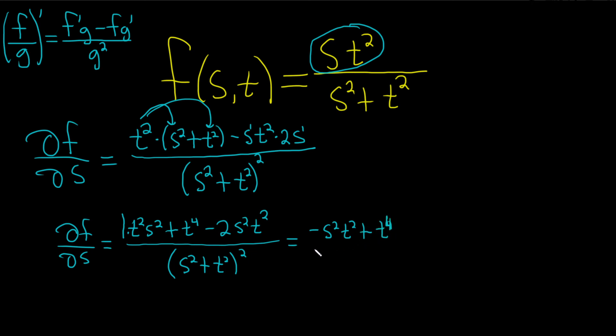There's the 4. All over parenthesis s squared plus t squared squared. And that would be it. That would be the final answer.